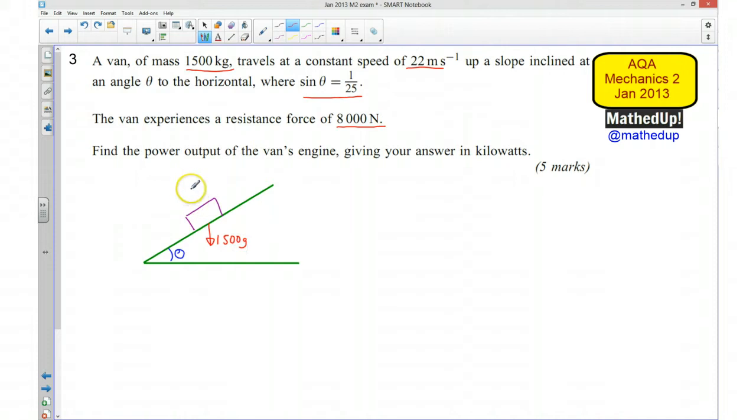I'm also going to have a reaction force on my van in this direction. We're told it experiences a resistance force of 8000 newtons. It's going up the slope, so the resistance force is in this direction. That's 8000 newtons.